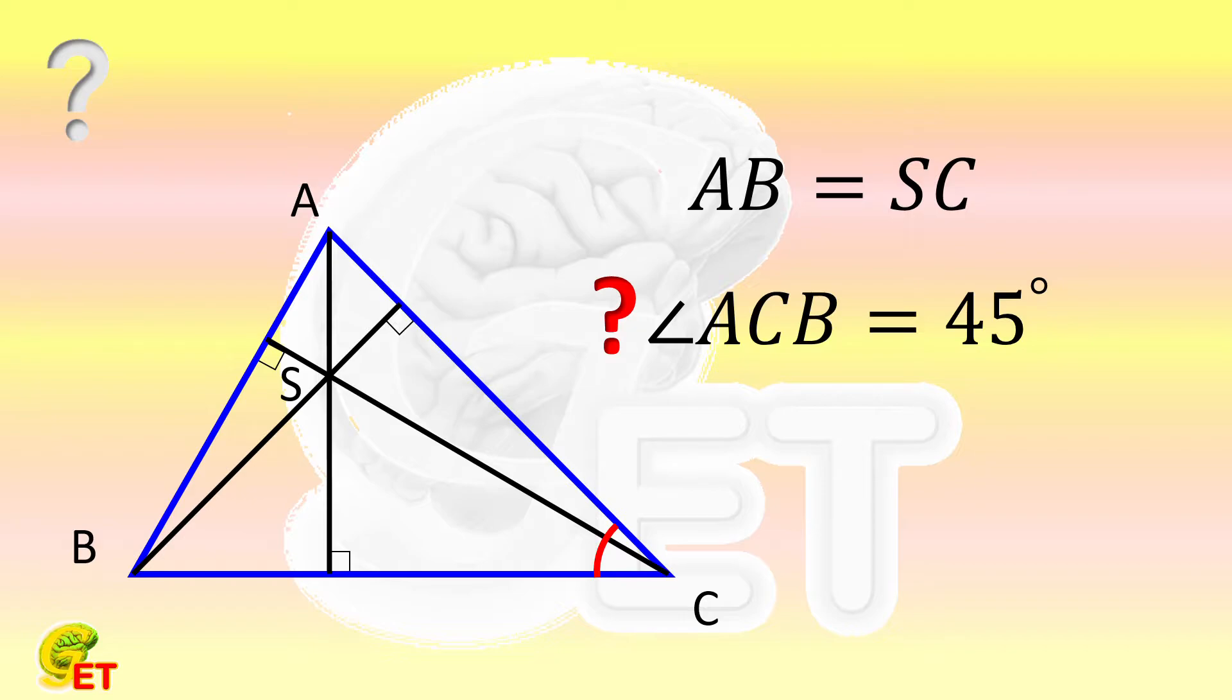The target is 45 degrees. And the conditions include the equal lengths of two segments. Everyone will easily think of an isosceles right triangle. Therefore, we'd like to try to move the two equal segments AB and SC to construct an isosceles right triangle, certainly with an angle of 45 degrees.